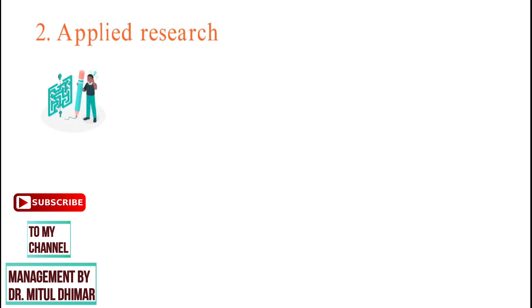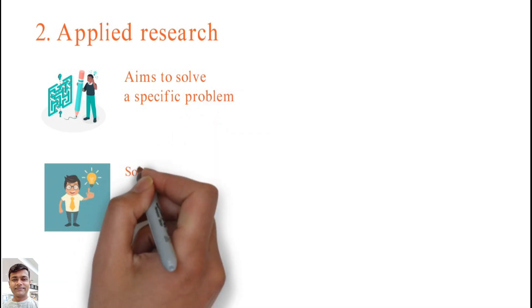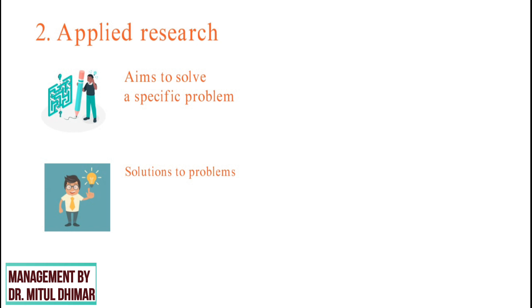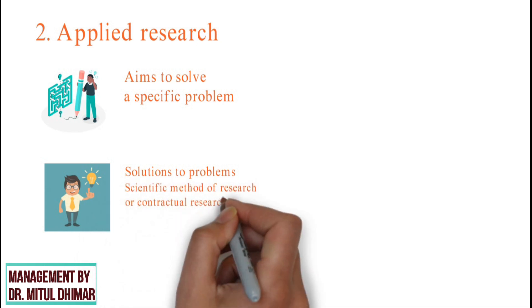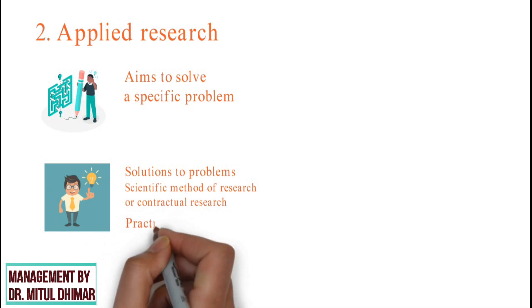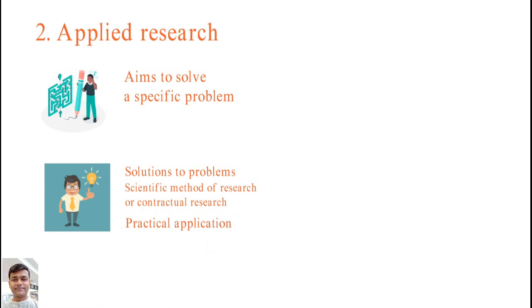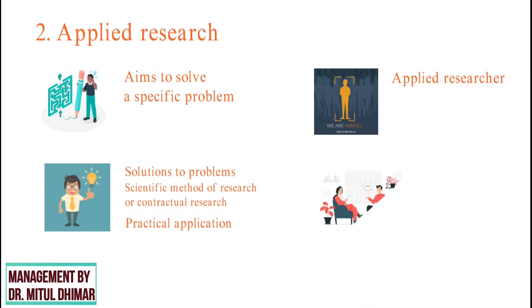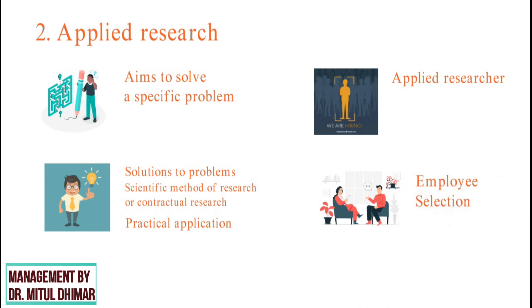Type 2: Applied research. Applied research is a type of research that aims to solve a specific problem or to provide innovative solutions to problems affecting an individual, group or society. It is often referred to as the scientific method of research or contractual research because it involves the practical application of scientific methods to everyday problems. For example, an organization might hire an applied researcher to determine how to select the employees who are best suited for a certain position in the company.